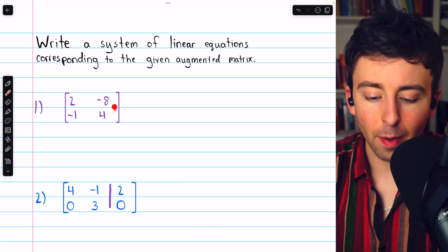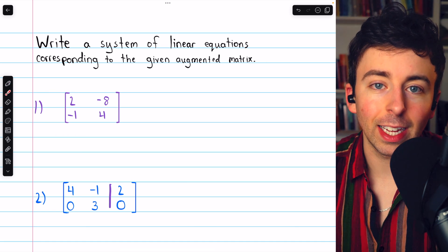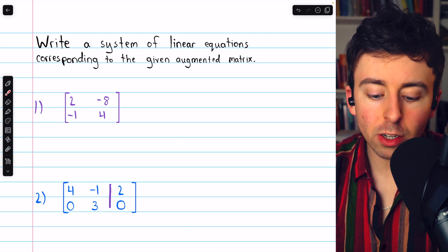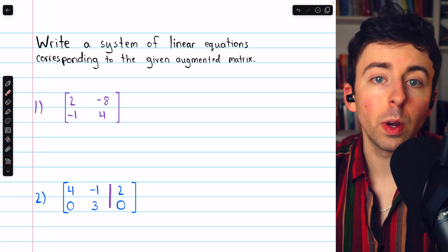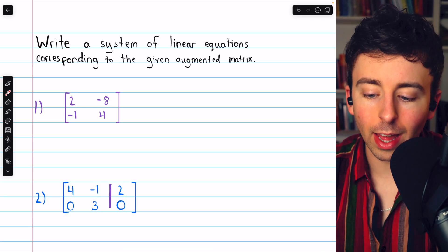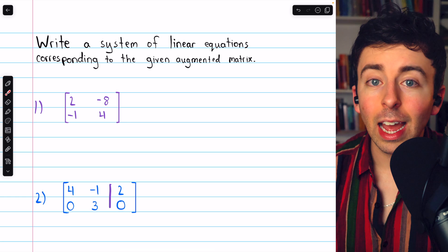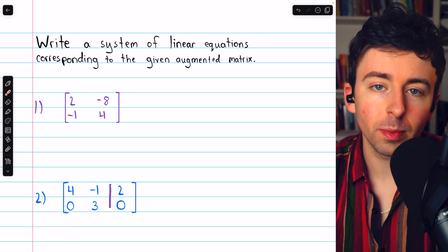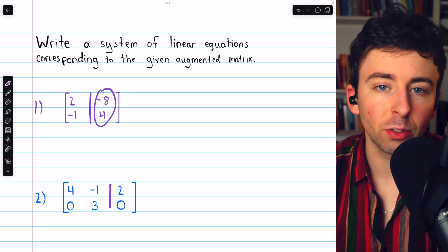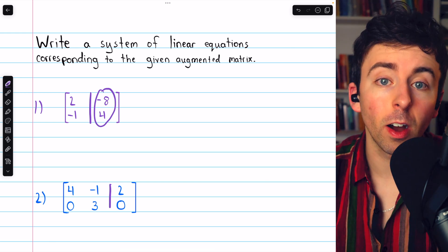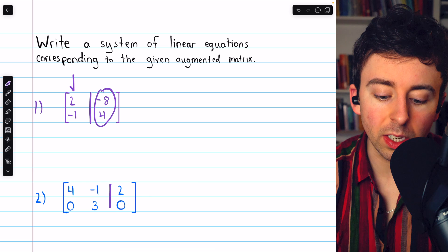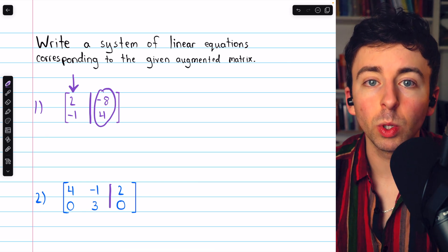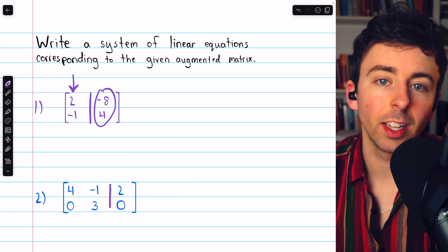Let's begin with the first example and begin by considering its size. It is two rows by two columns. Each row corresponds to an equation, so the system we have to write will have two equations. How many variables will it have? Well, there are two columns in this matrix. One of the columns, the last one, has to correspond to the constants, which leaves only one column to represent one variable. Hence, our system will have two equations and a single unknown.